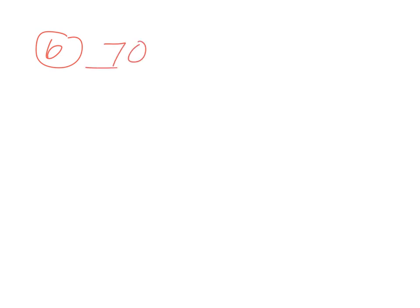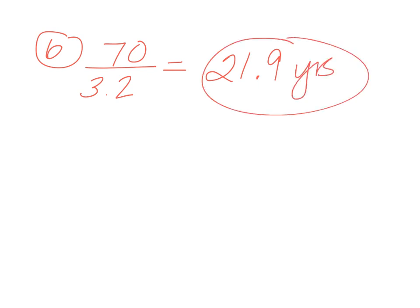Number six: recent estimates put the growth rate at 3.2%. How many years to double? Use 70 divided by 3.2. Round to three significant figures. That's all for population math practice number three.